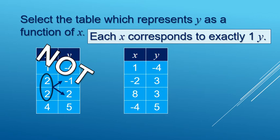So the rule of thumb with a table is that none of the x's repeat. Here we have two twos for x's. Here each x is written only once. Check out these other videos on identifying functions.